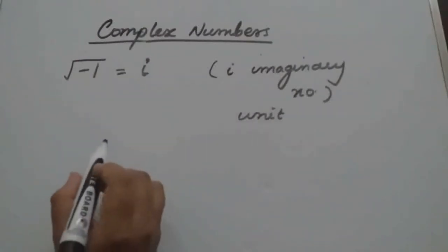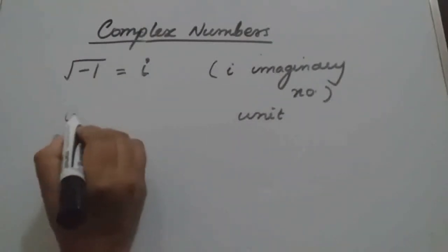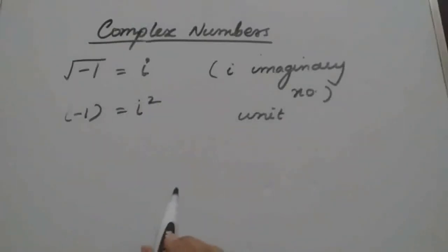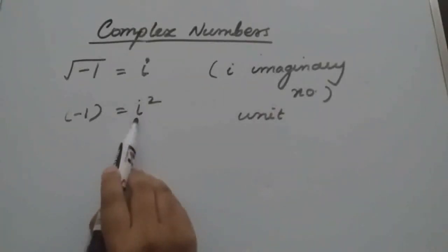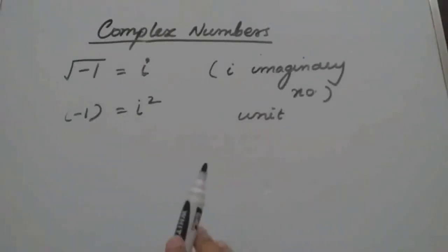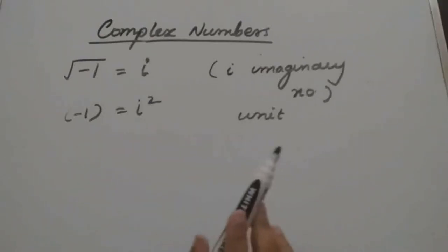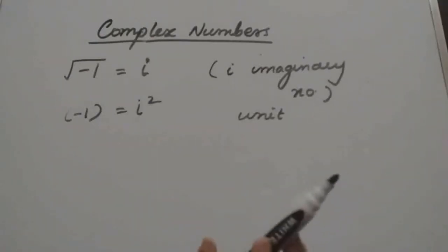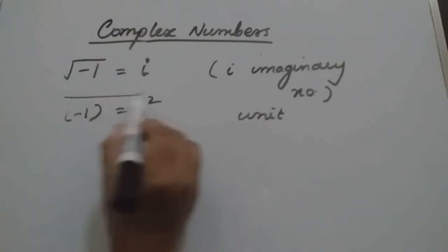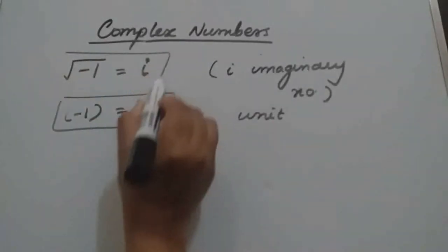If you take square root on both sides, i squared equals minus 1. Imaginary number is the only number for which the square of that number is negative. Till now we saw that the square of any real number cannot be negative, but here i squared gives a negative number.